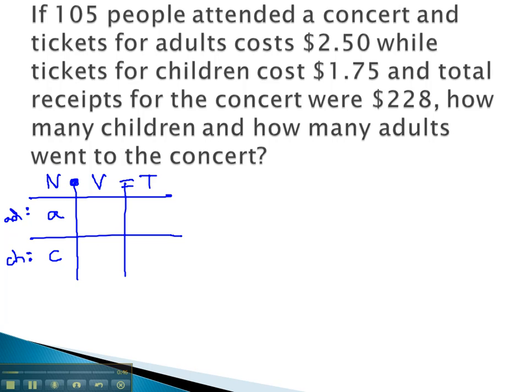We then attach a value to each of them. An adult is given a value of 250. Because this is in dollars, 2.50, we will do everything in this problem in dollars. Children tickets are assigned a value of 175, also in dollars.